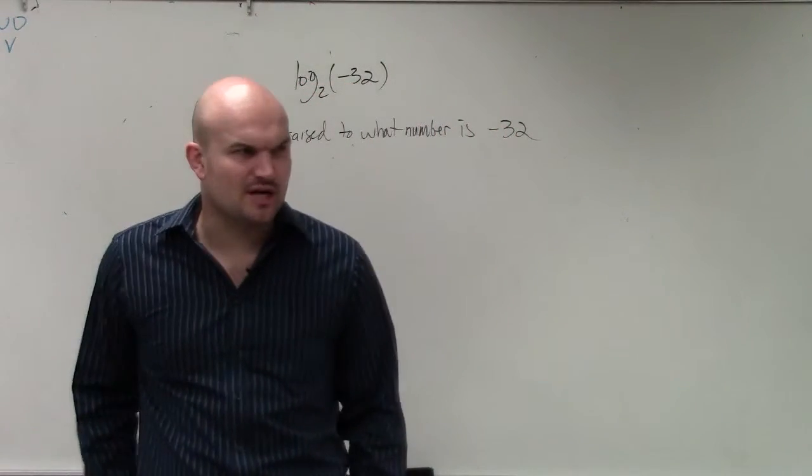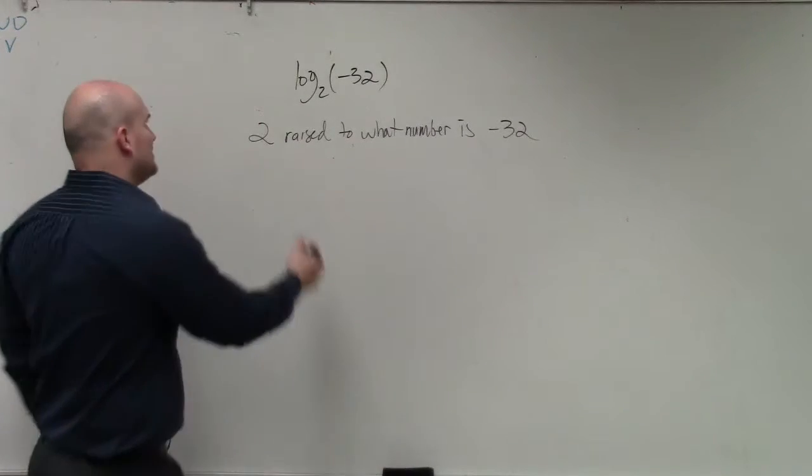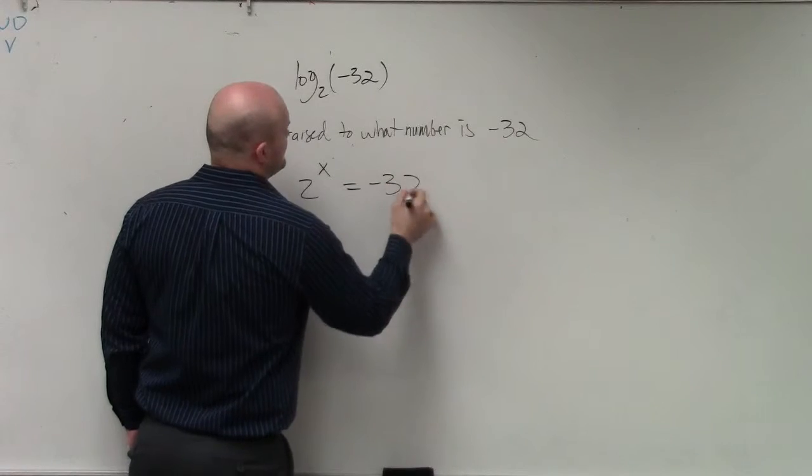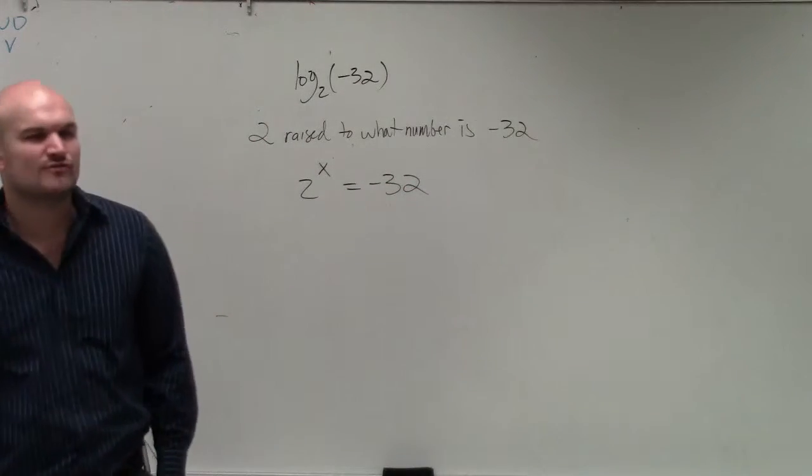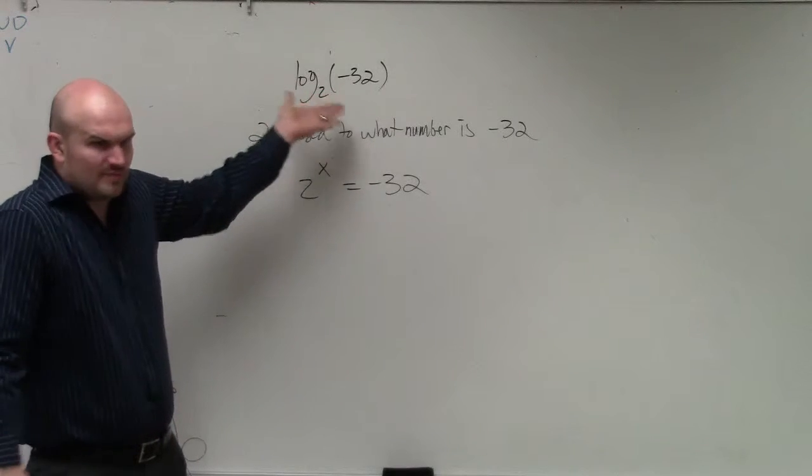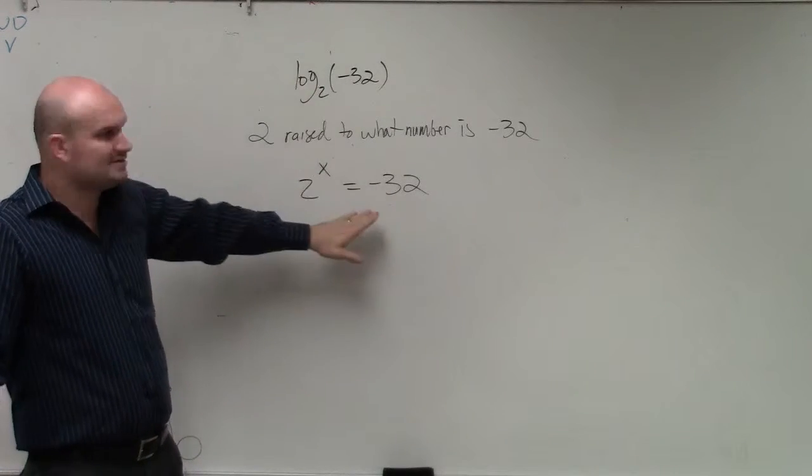And once you guys get kind of used to these, they'll start making a little bit more sense. So the first problem that we look at is I could say 2 raised to what number equals negative 32? So I can write this in exponential form. And that's the way I like to visualize it. Because logs, even though logarithms are great, what do they really say?